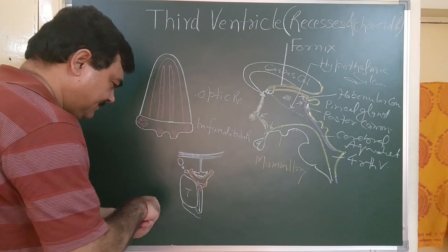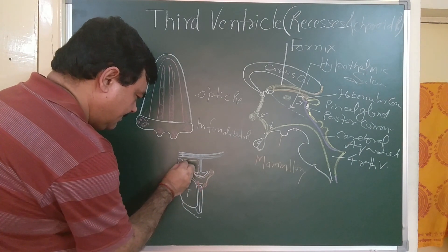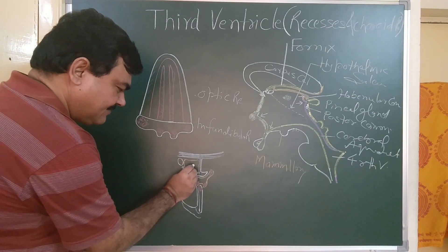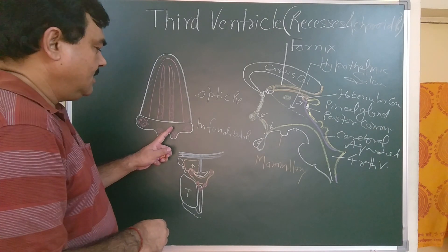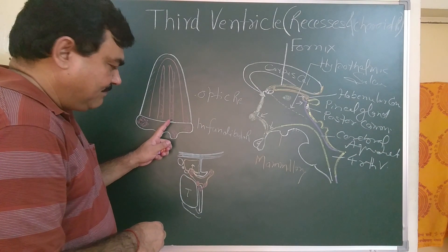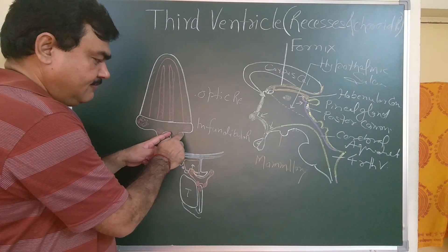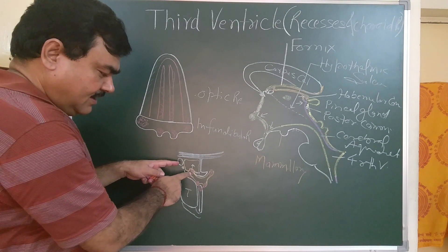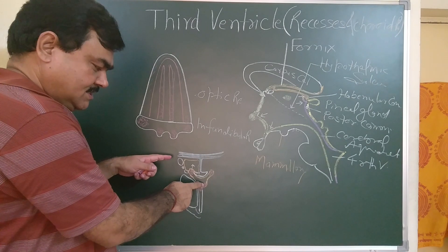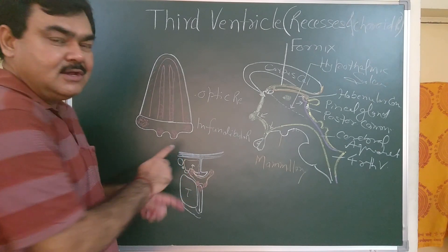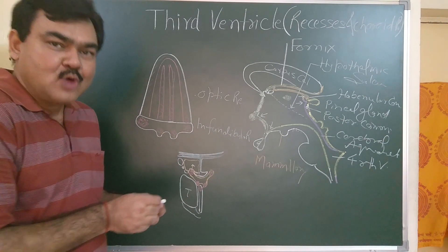The CSF also goes into the lateral ventricle from here. So this is the choroid plexus and tela choroidea — the fold of pia mater forms the tela choroidea, and the plexus of capillaries within it forms the choroid plexus. The choroid plexus of the third ventricle is formed by the anterior choroidal artery.